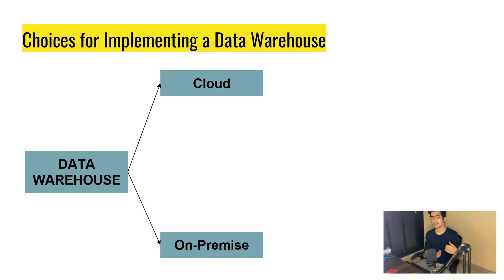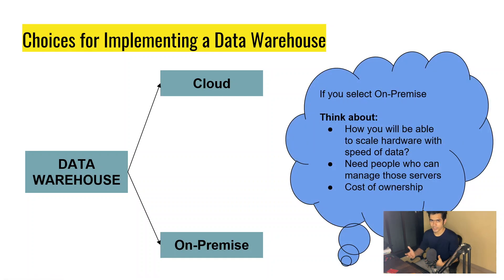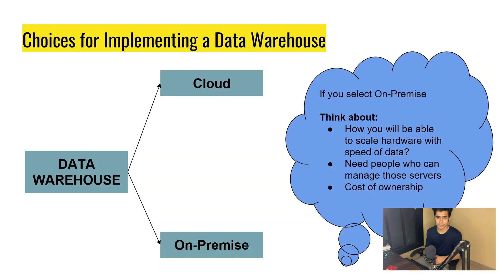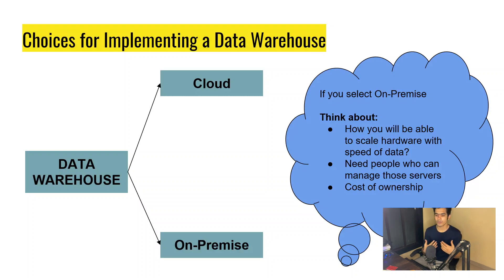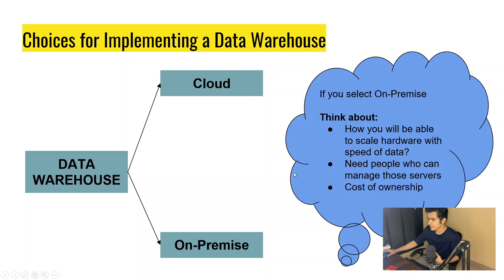We need to understand why we are going to the cloud and when we should use an on-premise server. With on-premise, you buy an actual server — all the CPUs, hardware, RAM, and everything. I can just build a server in my room, plug it into power and create my server. The problem with on-premise is that if I run out of space — say I buy a 100 GB hard disk — and my data is growing at a rapid pace, I have to go to the market and buy a new hard disk to scale. And if in six months my data grows again rapidly and I don't have the money or capacity to scale those servers, that's a problem.